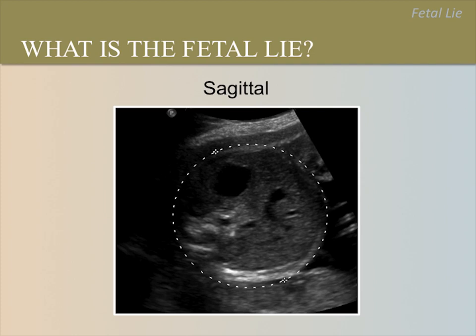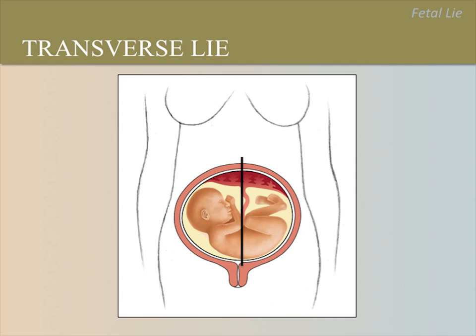This is a sagittal view of the uterus. What is the fetal lie? In this image, we see a transverse or cross-section of the fetal abdomen, and we can identify the stomach and umbilical vein. Since this is a sagittal view of the uterus, the fetus must have a transverse lie. This illustration shows how a sagittal slice through the fetal chest and abdomen looks when the fetus has a transverse lie.